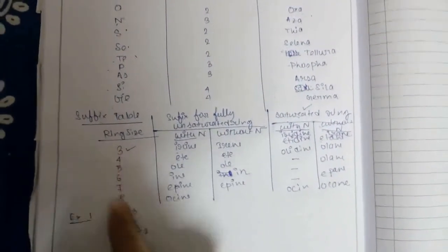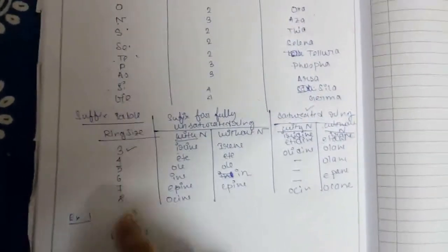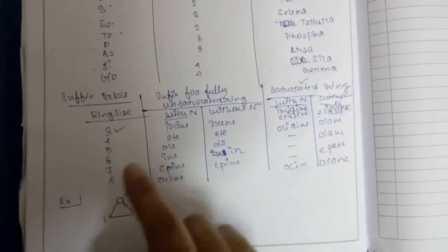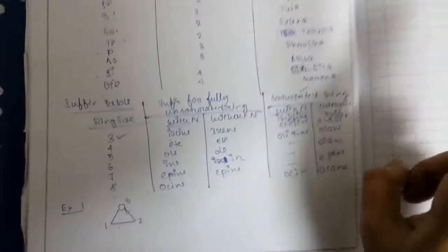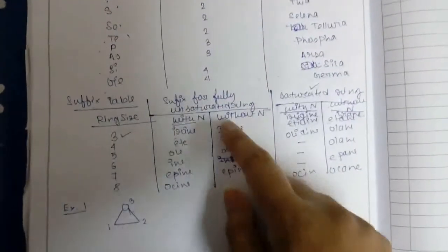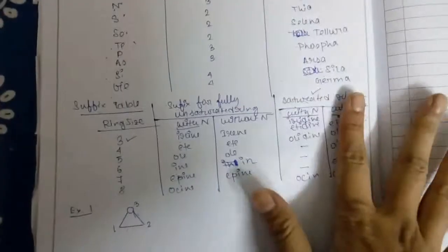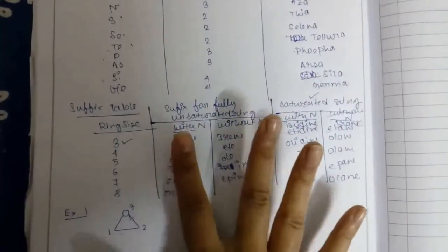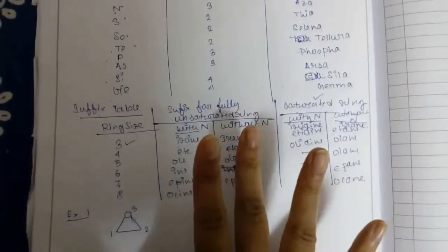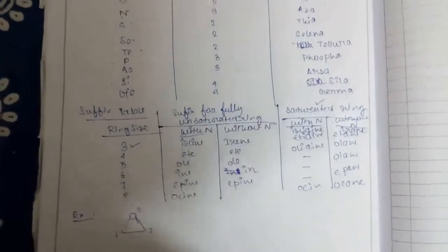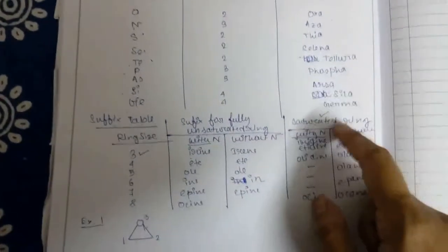The suffix table is for ring size depending upon the ring size, from 3 to 8 members. More ring sizes are possible, but we are considering up to 8. Two types are possible: fully unsaturated rings and fully saturated rings. Fully unsaturated rings may contain nitrogen or may contain no nitrogen, and saturated rings also may contain nitrogen or not.